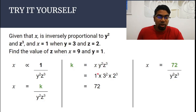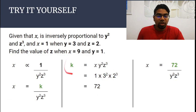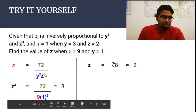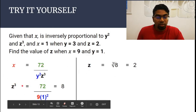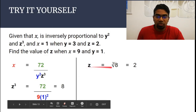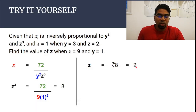Rearrange to make k the subject: k equals x times y squared times z cubed. Substitute the given values — x is 1, y is 3 (3 squared), z is 2 (2 cubed) — and we should get k equals 72. Substitute back into the original equation: x equals 72 over y²z³. Once we have our equation relating all the unknowns, make z cubed the subject, then substitute x = 9 and y = 1 to get z cubed equals 8. To find z, cube root both sides: z equals the cube root of 8, which equals 2.